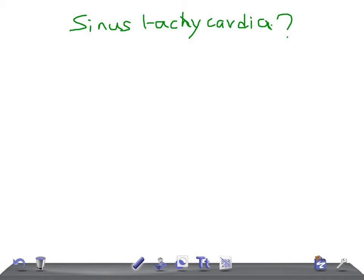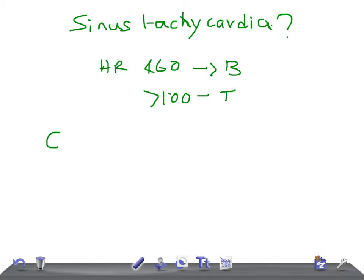After that, you need to know what a normal cardiac sinus rhythm is. If the heart rate is below 60, we call it bradycardia. If it's more than 100, we call it tachycardia. So to call a rhythm a normal cardiac sinus, the heart rate should be between 60 and 100 beats per minute.